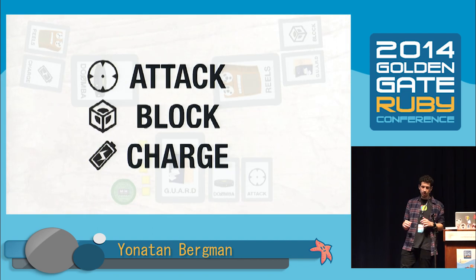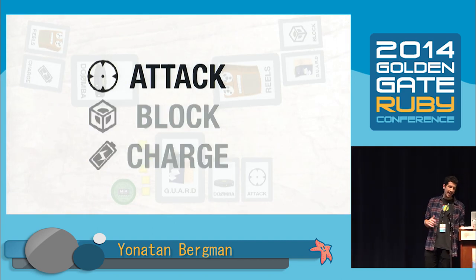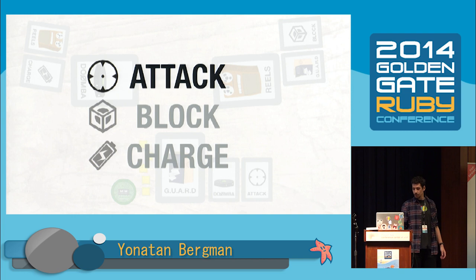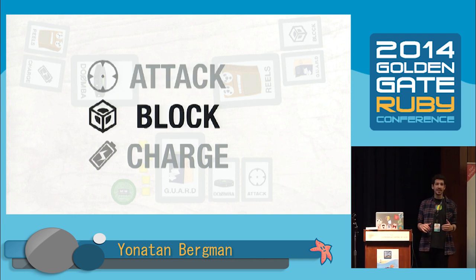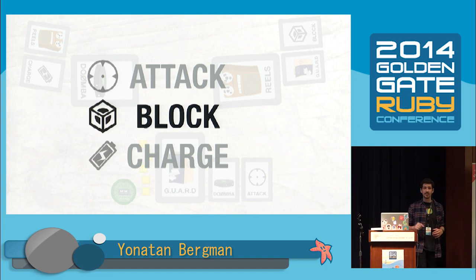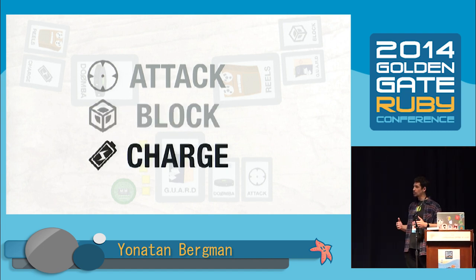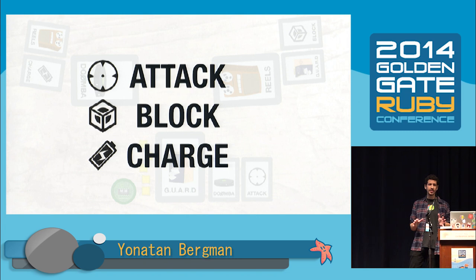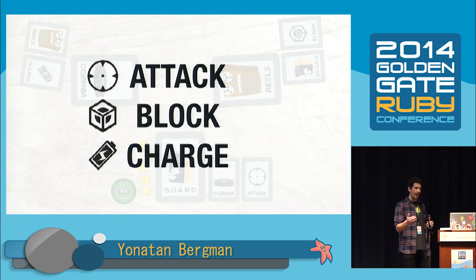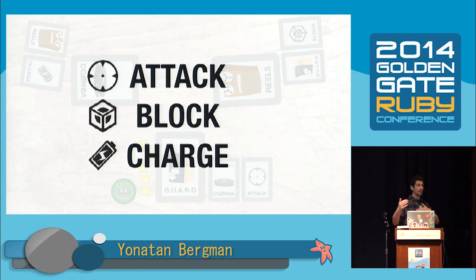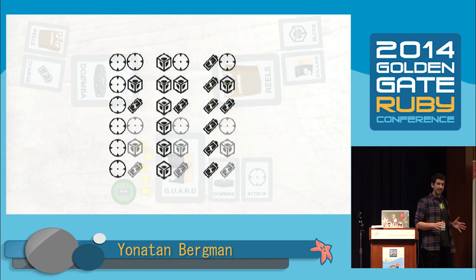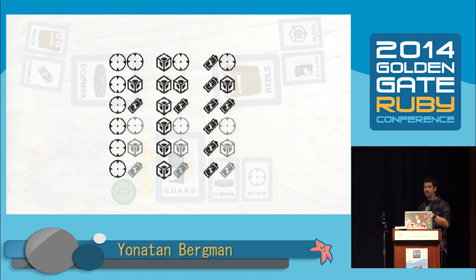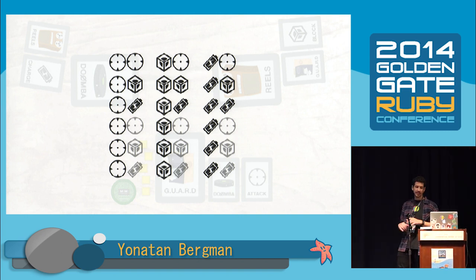Everyone has the same available actions and targets representing the other players. Everyone reveals their chosen target. Starting from the start player, each player can change their hidden action but pay one energy to do so — really useful if you're trying to bluff someone or if everyone is ganging up on you. Players then reveal their chosen action. You can choose between three actions: Attack, which removes one energy from your target and disables any charge they're doing; Block, which protects you from incoming attacks but costs one energy if used when no one is attacking; and Charge, which adds one energy to your pool.